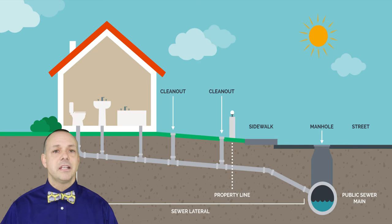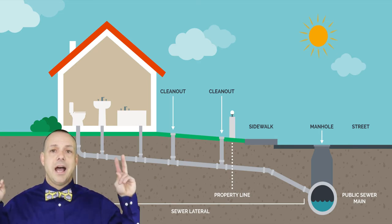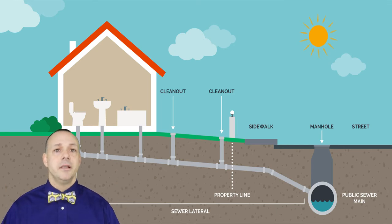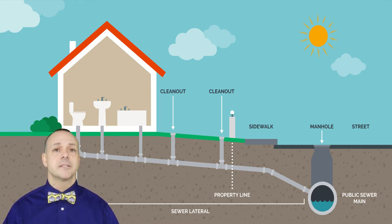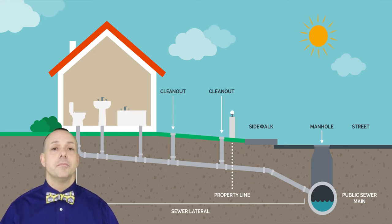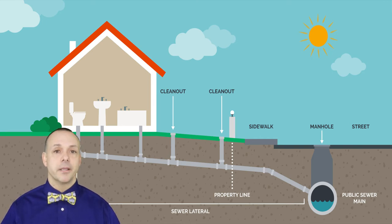Some disadvantages include the homeowner still being responsible for problems or issues on the house side of the pipes. It encourages an out-of-sight, out-of-mind behavior for the homeowner — they may not pay as much attention to the materials being thrown in the toilets or drains. There could be an outstanding sewer assessment being passed on to the buyer, so it's best to do some due diligence before you put in an offer on any property.